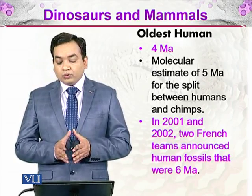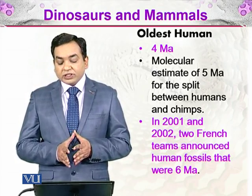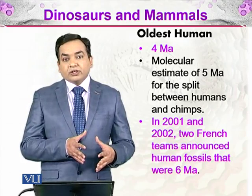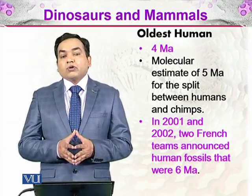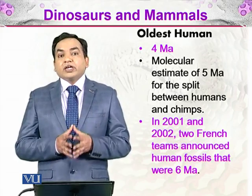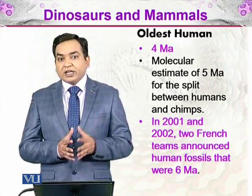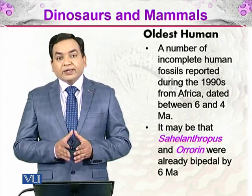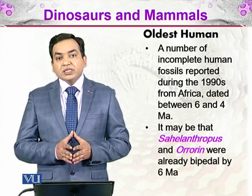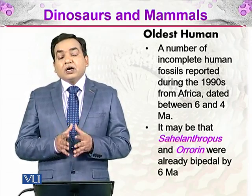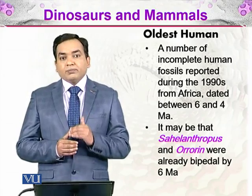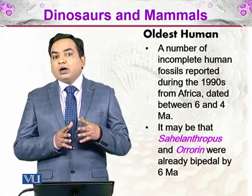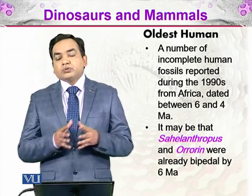In 2001 and 2002, two French teams announced human fossils that were 6 million years old, found in rocks dated to that age and containing human remains. A number of incomplete human fossils were reported during the 1990s from Africa, dated between 6 and 4 million years ago. While there are some gaps in the fossil record, we can see an elaborate journey from simple ape-like humans to modern humans.